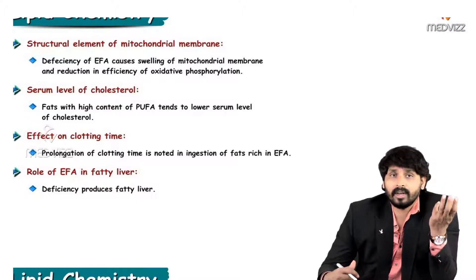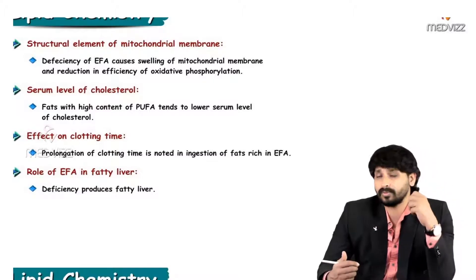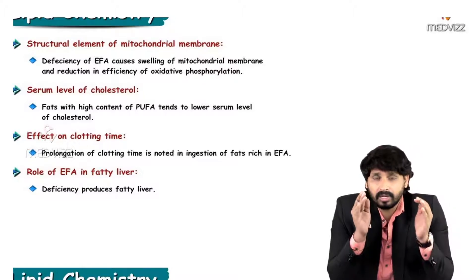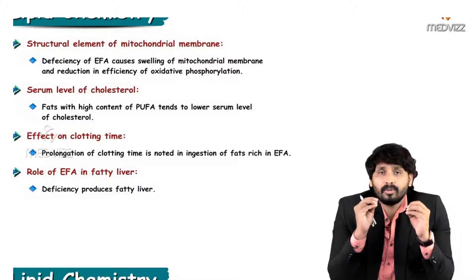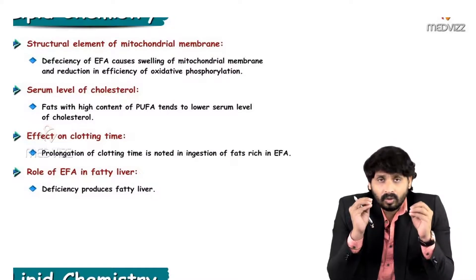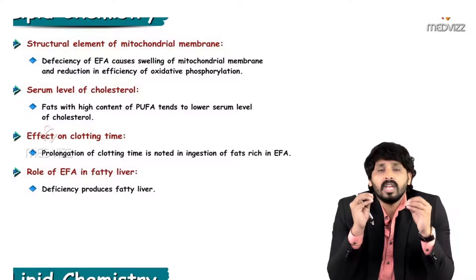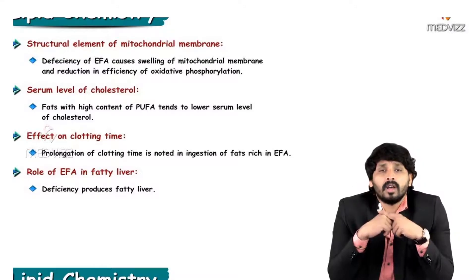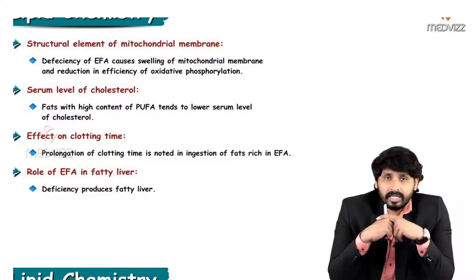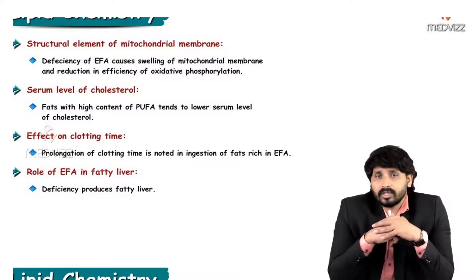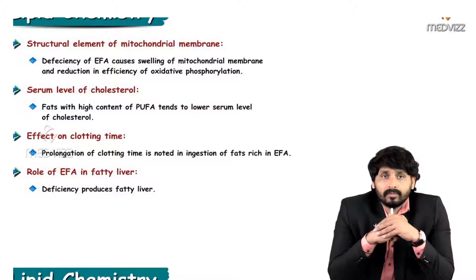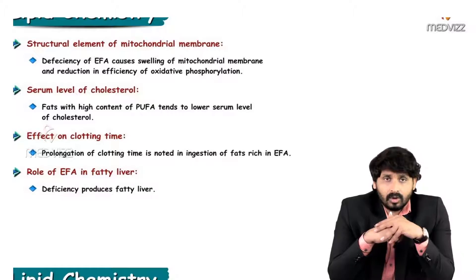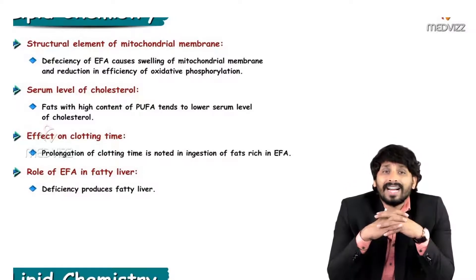Essential fatty acids are also structural elements of the mitochondrial membrane. Deficiency of essential fatty acids causes swelling of the mitochondrial membrane and reduction in efficiency of oxidative phosphorylation. Oxidative phosphorylation is very important for production of ATP, occurring in the mitochondria. If there is no healthy mitochondrial membrane, pathways happening in the mitochondria — such as oxidative phosphorylation where ATP is produced — will be disturbed, altering your ATP production.